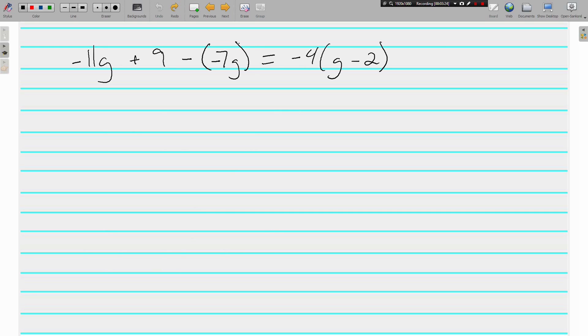Here's another one. Negative 11g plus 9 minus negative 7g. I don't like two signs in a row right there. I'm going to rewrite it. Negative 11g plus 9. We know that subtracting a negative is the same thing as adding, so plus 7g. And I'll go ahead and distribute here on the right side. Negative 4 times g is negative 4g, and negative 4 times negative 2 is a positive 8.